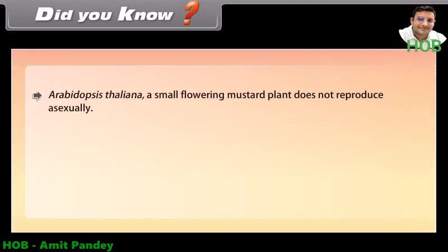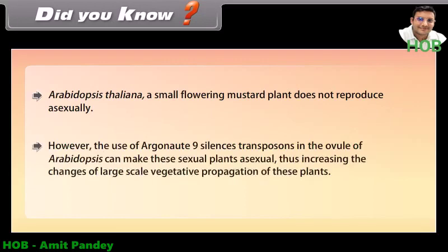Did you know? Arabidopsis thaliana, a small flowering mustard plant, does not reproduce asexually. However, the use of Argonaute 9 silences transposons in the ovule of Arabidopsis, which can make these sexual plants asexual, thus increasing the chances of large-scale vegetative propagation of these plants.